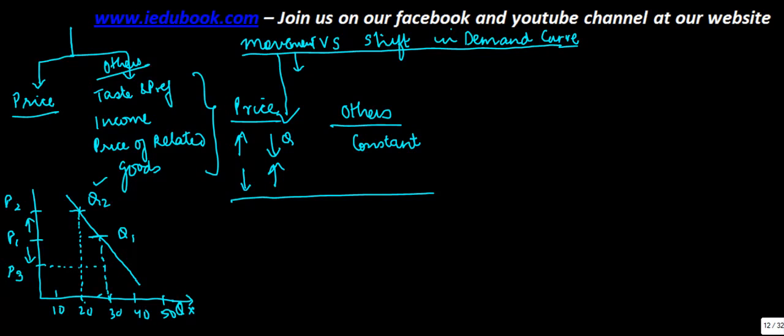When the price fell down to p3, if you draw a curve on this, the quantity q3 is equal to 38. Here it was 30, here it was 20. So any increase in price...